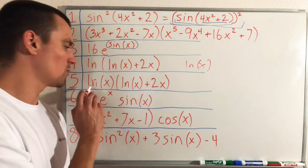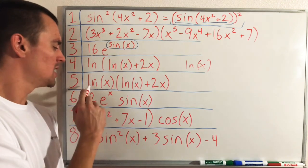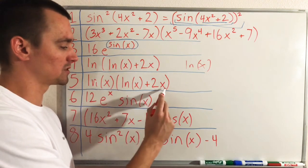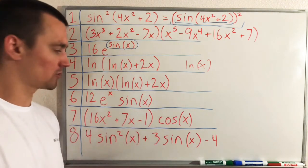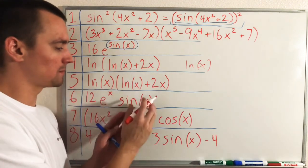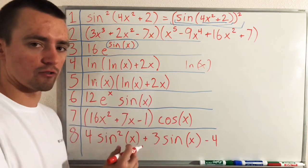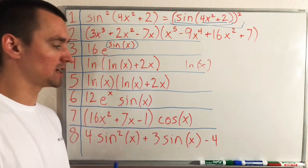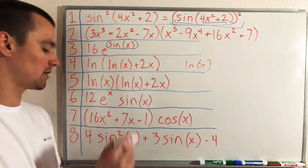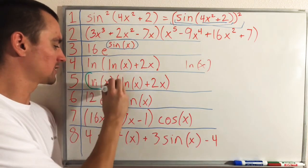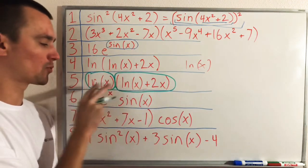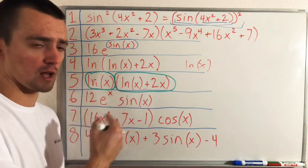Example five looks very similar but is different: ln(x) times (ln(x) + 2x). Now we do have a product — natural log of x as one function being multiplied by natural log of x + 2x as our other function. So in this case we apply the product rule, treating ln(x) as one function and ln(x) + 2x as the other.